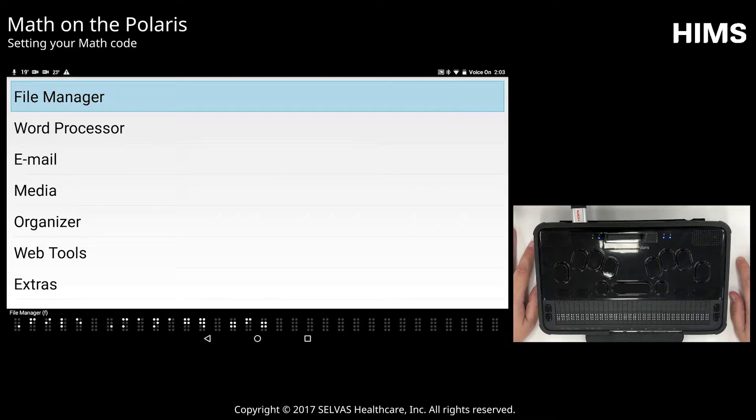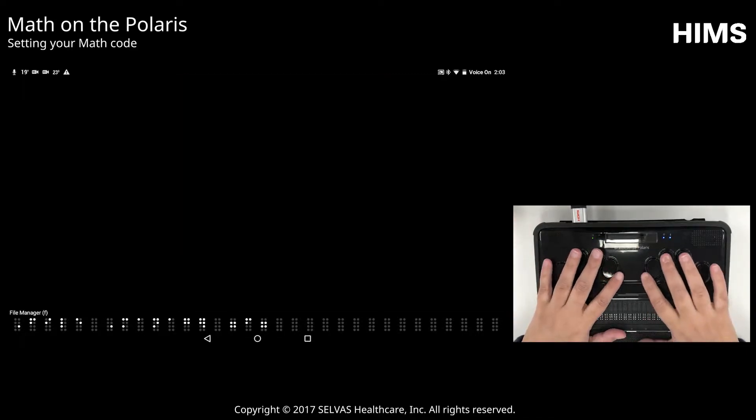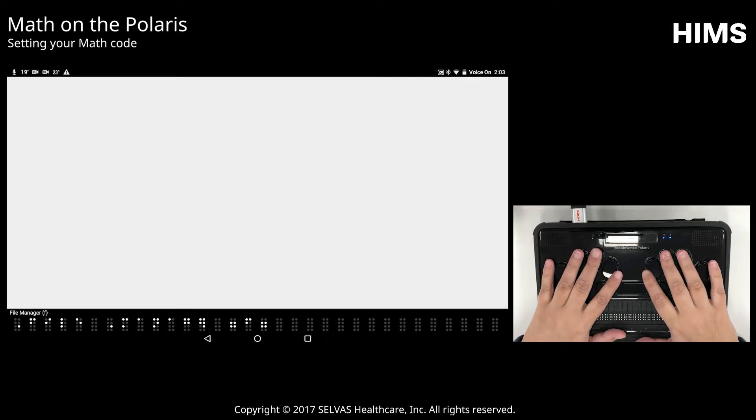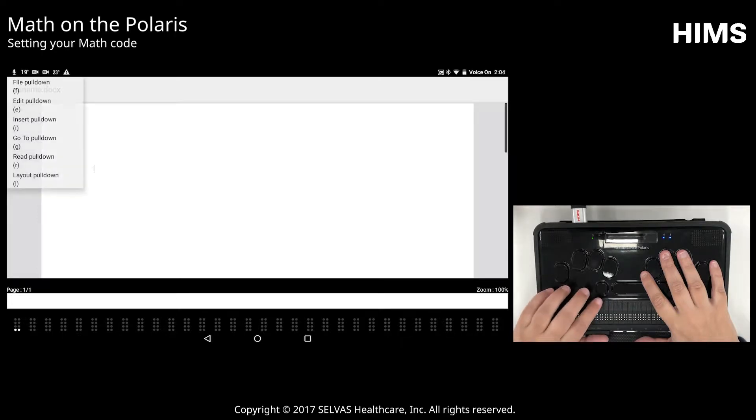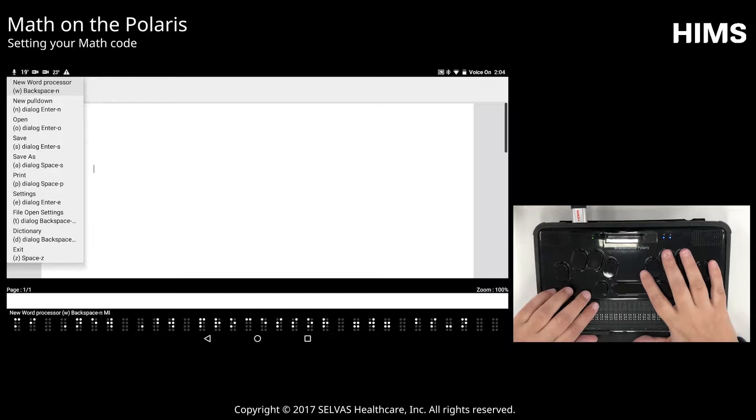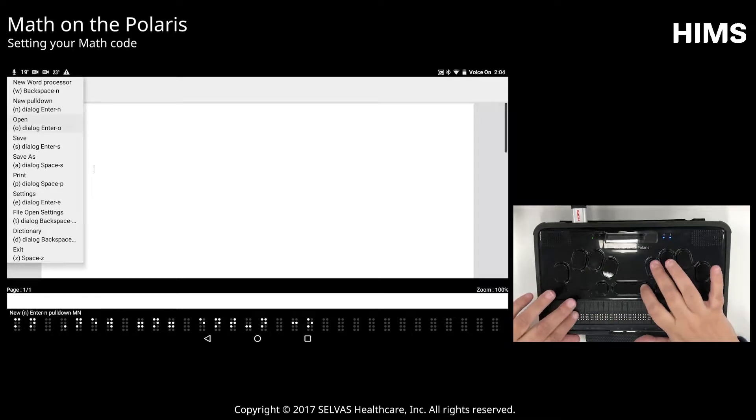I'm going to open a document in the word processor. Right now I'm starting in the main menu, and I'll press W to open the word processor. Now we have a blank document. The first thing I want to show you is how to choose which type of math you want to use, Nimeth or UEB. So I'm going to open the menu by pressing F2, then press enter on file. I want to open the settings dialog, so I'm going to move down to settings.